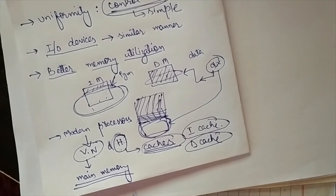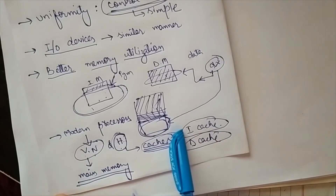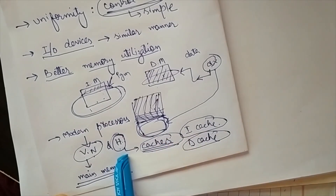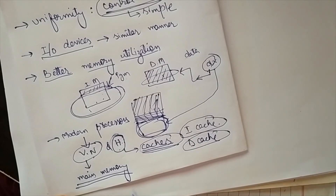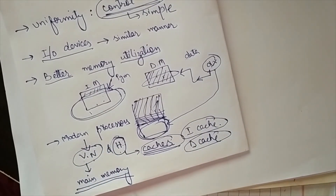We can say that in modern high-performance CPU chip designs, the aspects of both architectures are combined: an instruction cache and a data cache are used at the cache level, while in the case of main memory we are using a von Neumann architecture.